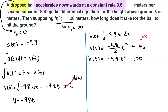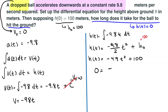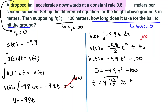This equation tells us the height of the ball after it was dropped. To find when the ball hits the ground, we note that height equals 0 at that moment. Setting h of t equal to 0: 0 equals negative 4.9t² plus 100. Subtracting 100 from both sides, dividing by negative 4.9, and taking the square root gives t approximately equal to 4.518 seconds.